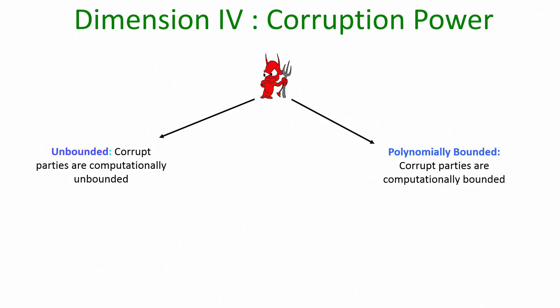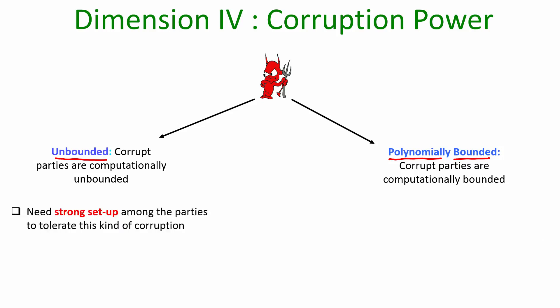Dimension 4 is based on the corruption power of the adversary. Remember, the adversary is at the end of the day some algorithm run by some computer. The adversary could be computationally unbounded — meaning we put no restriction on the computing resources of the adversary, it is allowed to do any kind of computation including brute force and exponential computation. Whereas in another category, the adversary is polynomially bounded, meaning the corrupt parties are only allowed to perform a limited amount of computation.